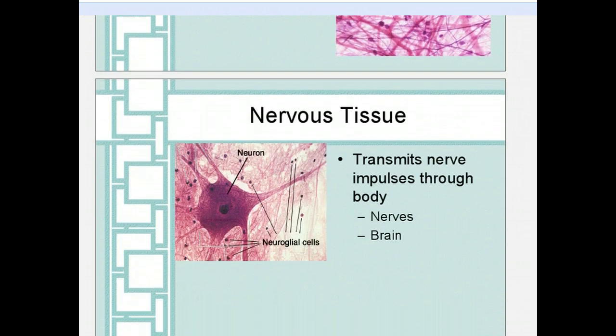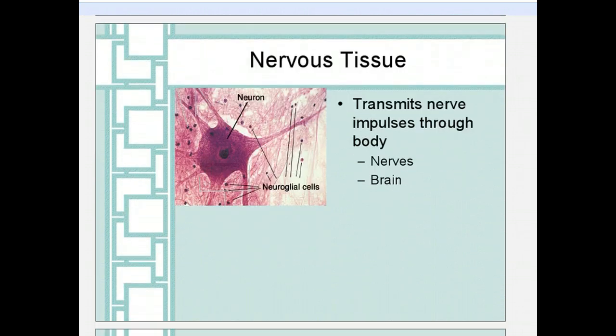The next type of tissue is nervous tissue. The nervous tissue transmits nerve impulses through the body. Nervous tissue is found in your nerves, your spinal cord, and your brain.